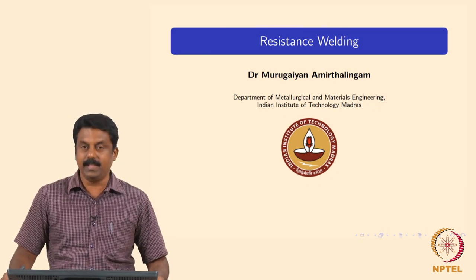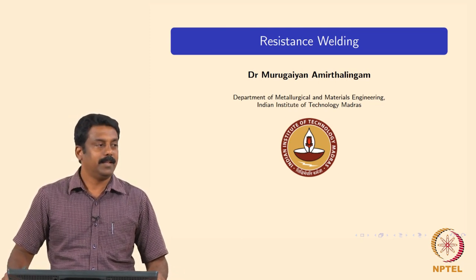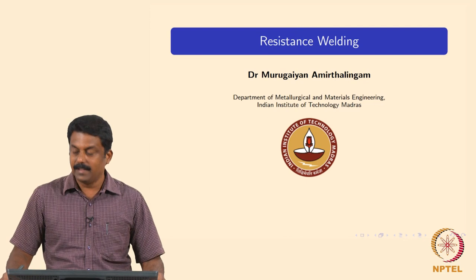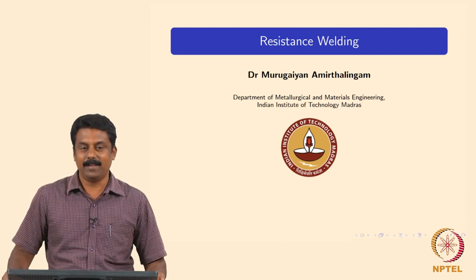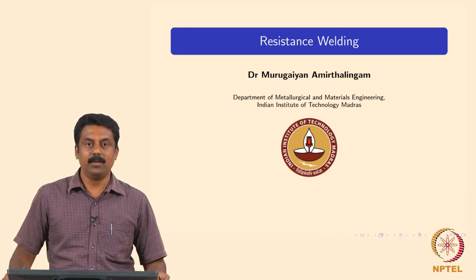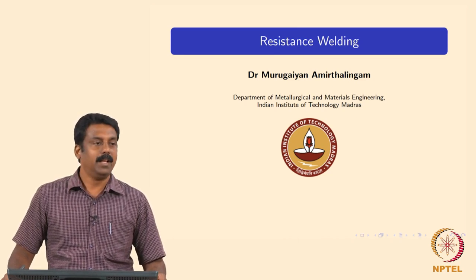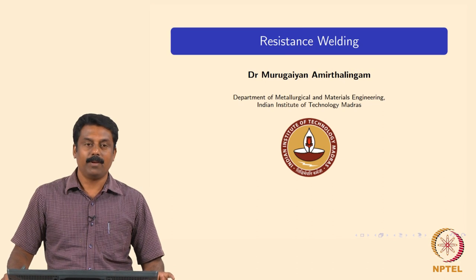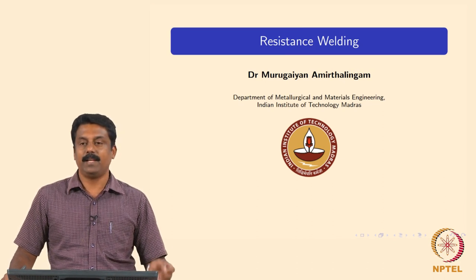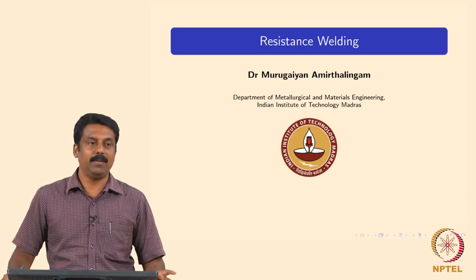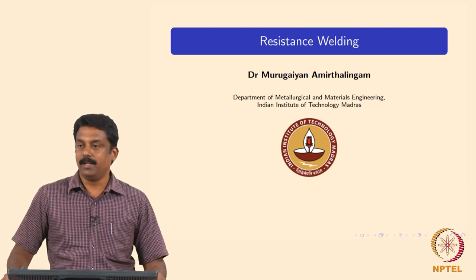So in this process, what is the basic principle? In resistance welding, heat generation is resistance heating — Joule heating. We will see again the physics of these processes: what is the main heat generation mechanism, how it is controlled, what are the factors that can influence the welding characteristics, and what are the factors that influence heat generation. There are a lot of variance factors that can influence heat generation in this process. We will see them one by one.